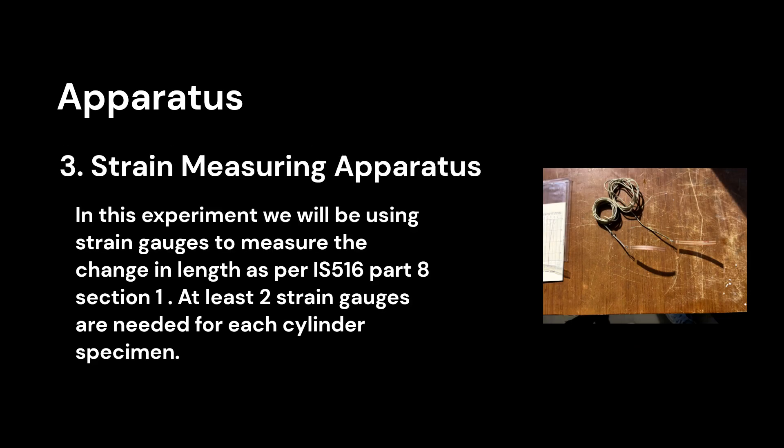Third, strain measuring apparatus: in this experiment we will be using strain gauges to measure the change in length as per IS-516 part 8 section 1. At least two strain gauges are needed for each cylinder specimen.